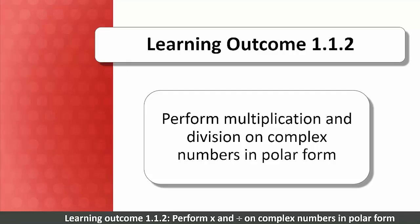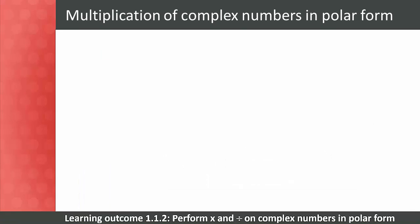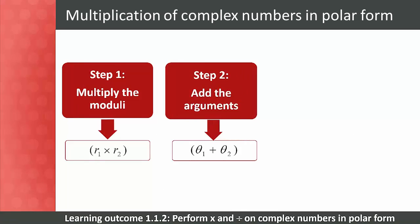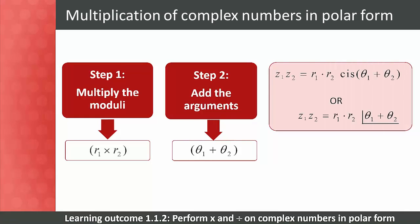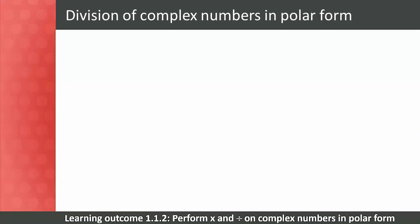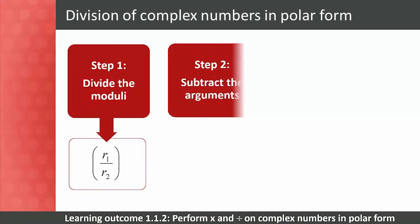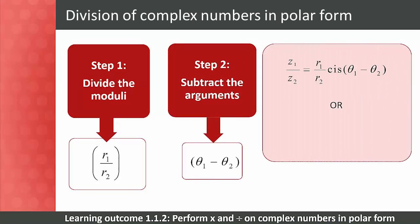Learning outcome 1.1.2: perform multiplication and division on complex numbers in polar form. When students are familiar with the concepts of standard and polar form we can move on to multiplication and division. Students should remember multiplication in polar form from level three. In polar form step one: multiply the moduli r1 times r2. Step two: add the arguments theta 1 plus theta 2. Here are two different ways to represent the multiplication of complex numbers in polar form. For division of complex numbers in polar form, step one we first divide the moduli r1 divided by r2. Step two: subtract the arguments theta 1 minus theta 2.